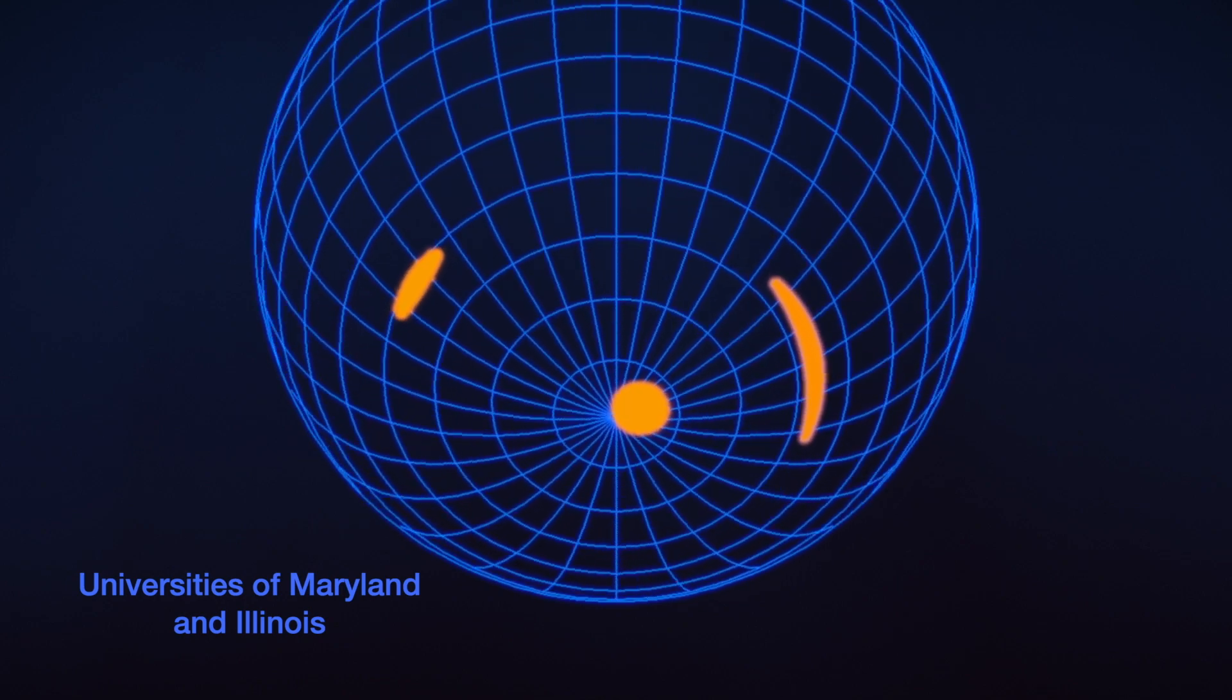However, the Maryland-led team also finds a third, cooler spot located slightly askew of the pulsar's south rotational pole, just at the edge of our view of the pulsar.